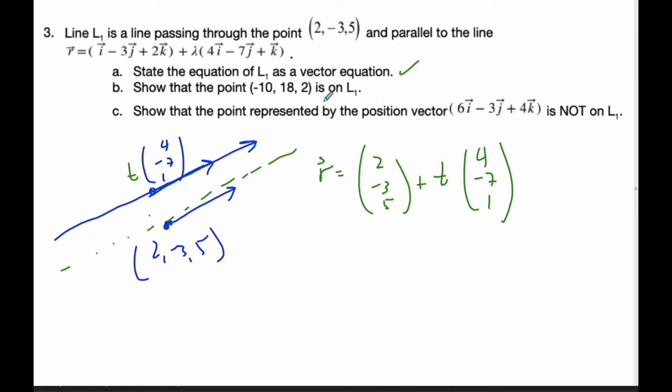Now for part B, to show that the point (-10, 18, 2) is on the line, it must satisfy this equation. So (-10, 18, 2) equals (2, -3, 5) + t(4, -7, 1). In order for this to be true,